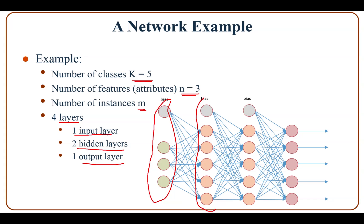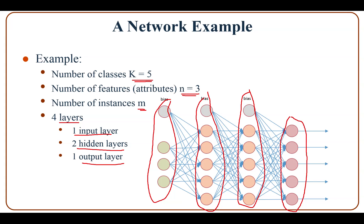The output layer gives the decision. For example, if the class of x is 1 then we have [1, 0, 0, 0, 0]. If the class is 2 then we have [0, 1, 0, 0, 0]. If the class is 3 then we have [0, 0, 1, 0, 0]. If class is 4 then we have [0, 0, 0, 1, 0]. And if the class of x is 5 then we have [0, 0, 0, 0, 1].